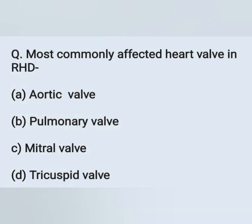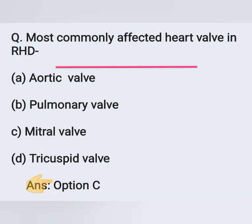Most commonly affected heart valve in rheumatic heart disease. Option A: aortic valve. Option B: pulmonary valve. Option C: mitral valve. Option D: tricuspid valve. The correct answer is the mitral valve. Option C is the correct answer.